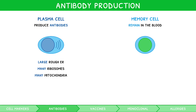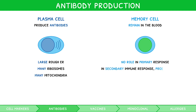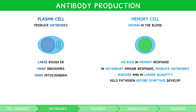But what is immunological memory? Well, whilst memory cells have no role in the primary immune response, i.e. the first encounter of an antigen, during the secondary immune response, i.e. a second encounter, they produce antibodies quicker and in larger quantities, thus killing the pathogen before symptoms develop. This explains why you rarely get the same disease twice.